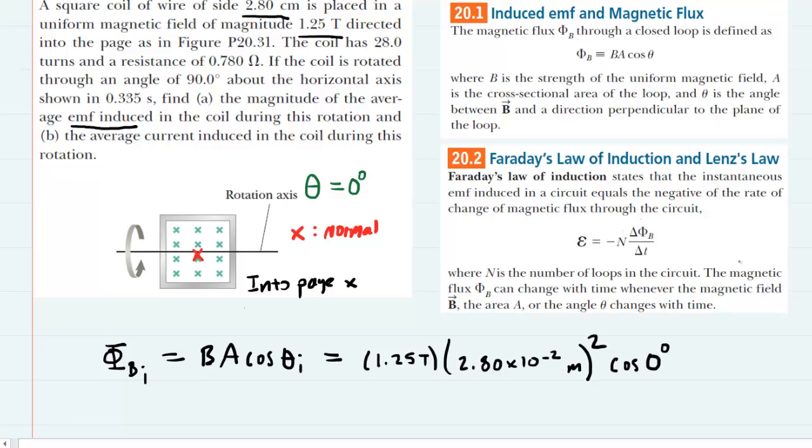Let's pick up our calculators and punch this in. Notice the cosine of zero degrees is one, so it doesn't need to be punched in, but if you punch it in, make sure your calculator is set to degree mode. You end up with 9.8 times 10 to the minus four, and the unit here is tesla multiplied by meters squared. This is our initial magnetic flux.